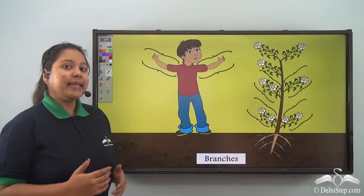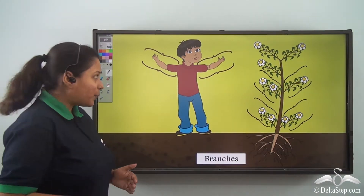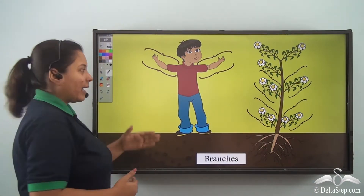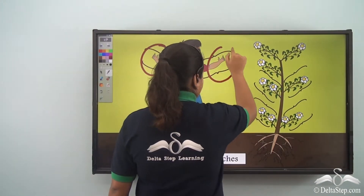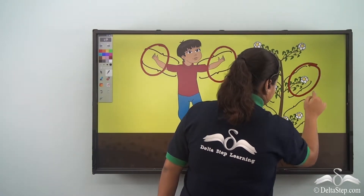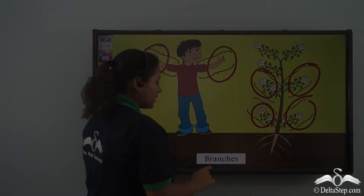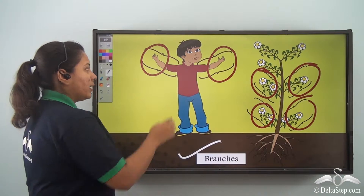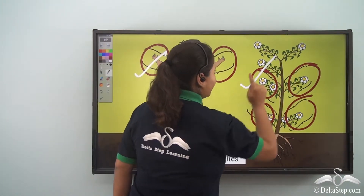"I have many hands unlike you. They are called branches." A human being has two hands, but a plant has many hands. What are these hands known as? They are known as branches. So, just like we have hands, the plants have branches.